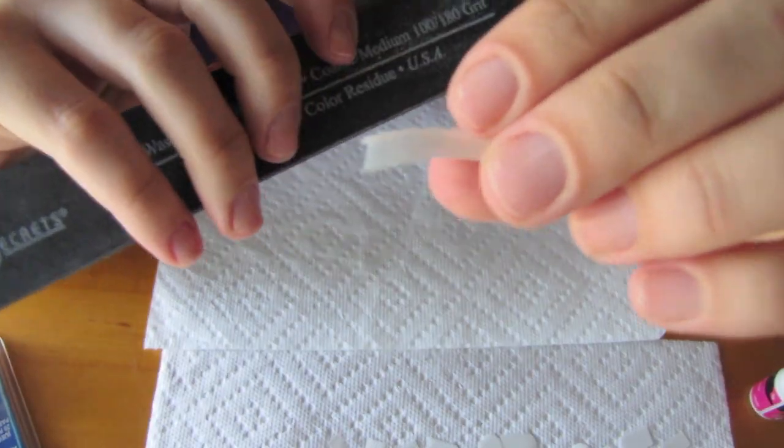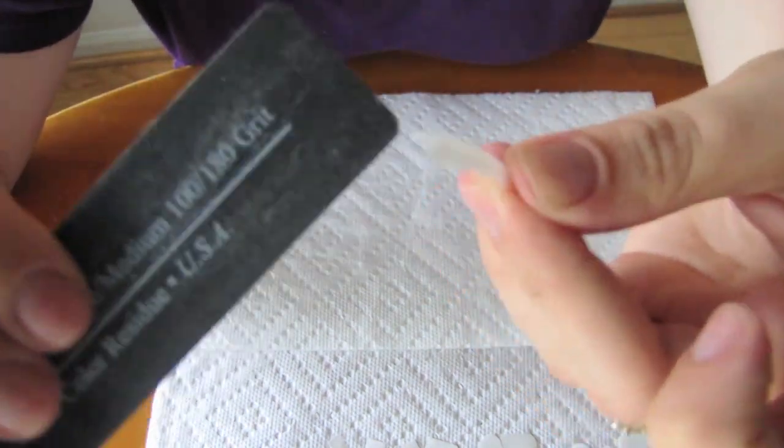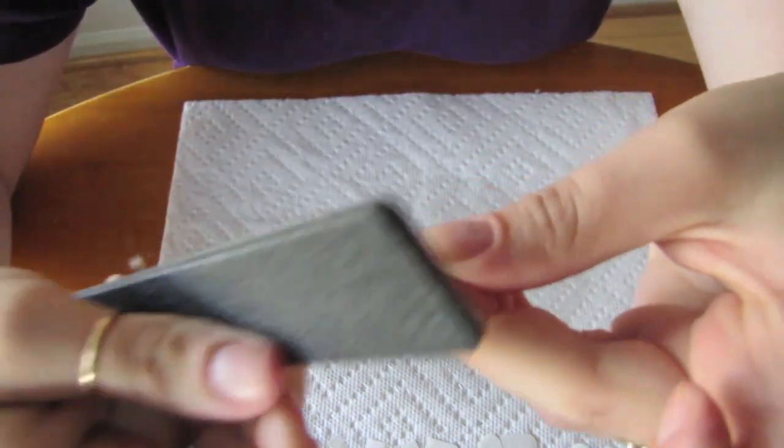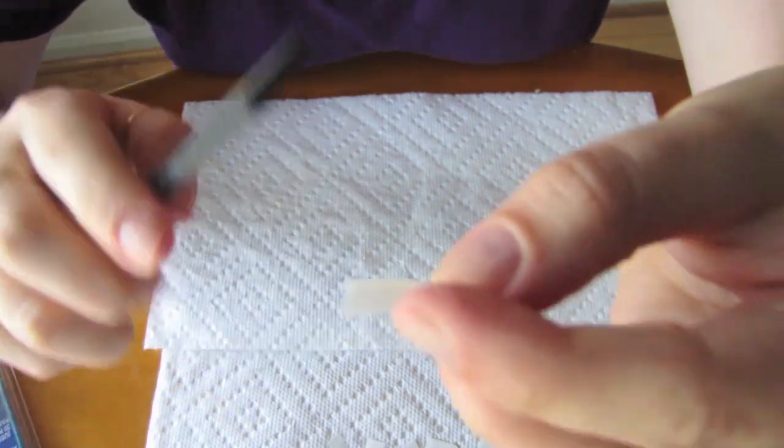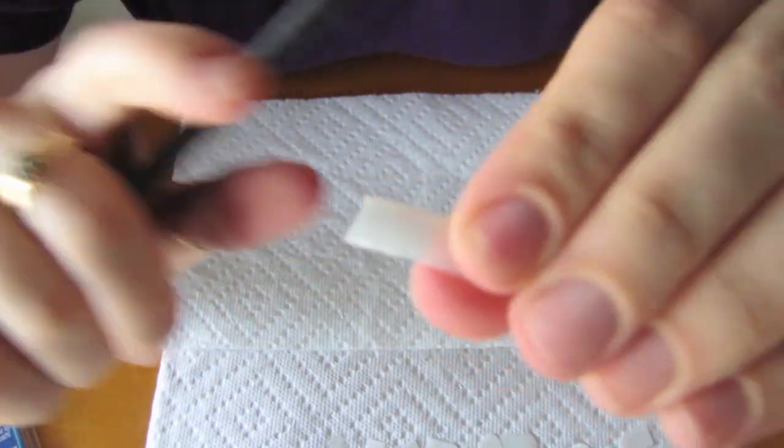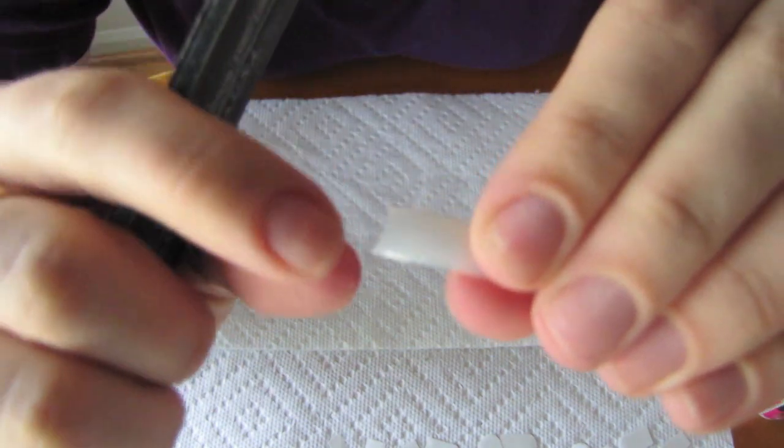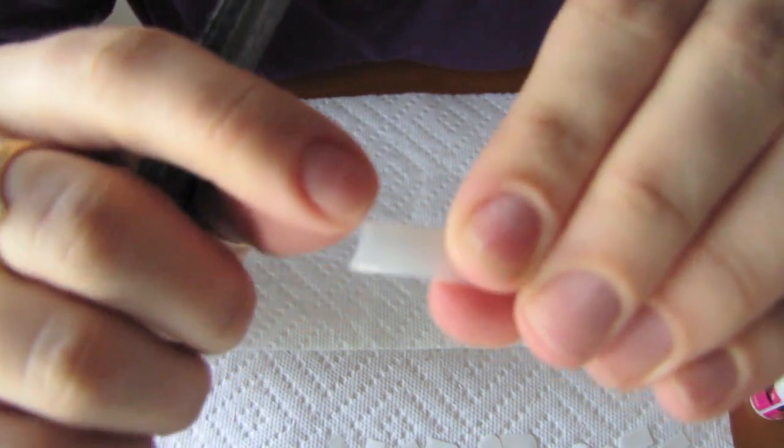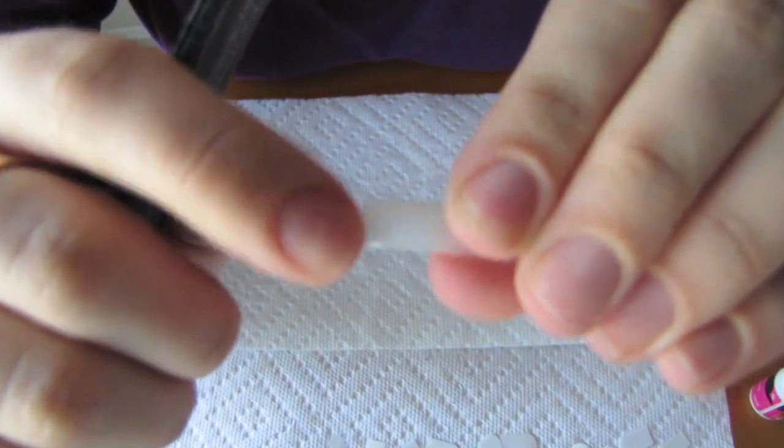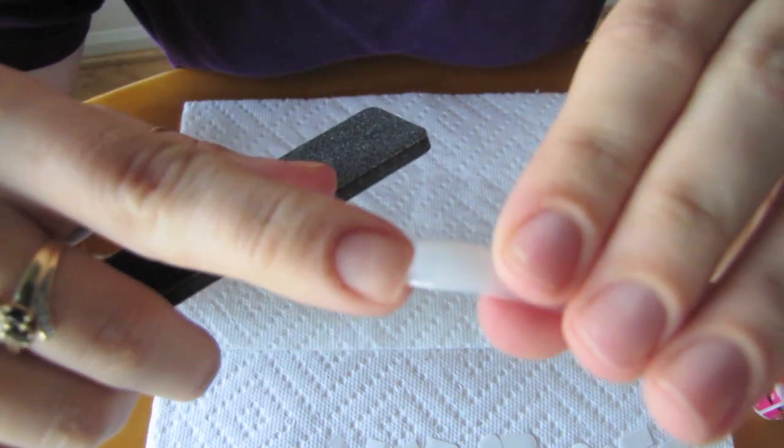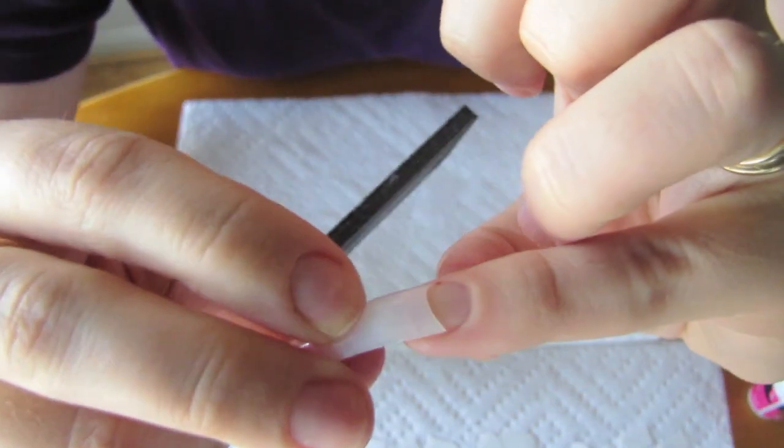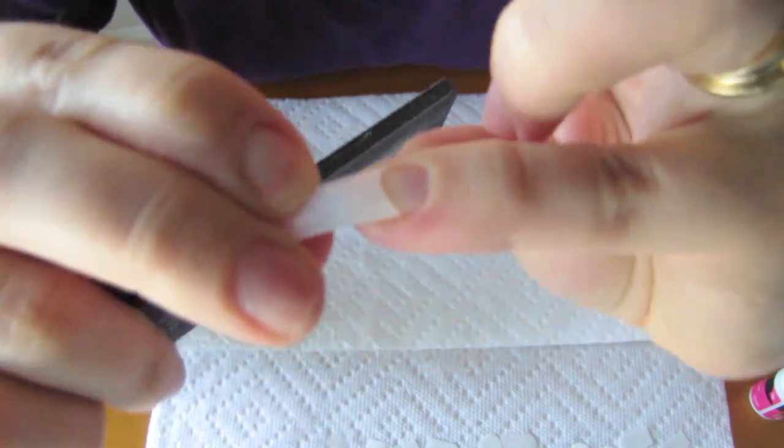So now to create a perfect fit, we're going to file down the edges. And then before gluing it to the nail, I'm going to file down the top of the tip well. What this is going to do is create a more natural seam.